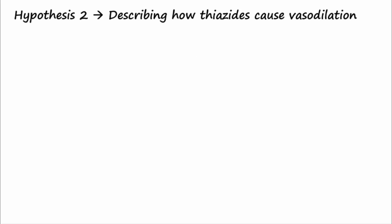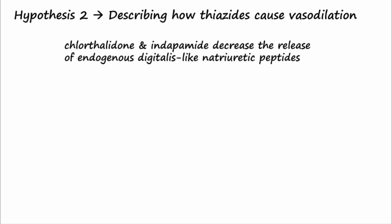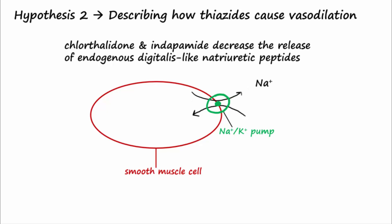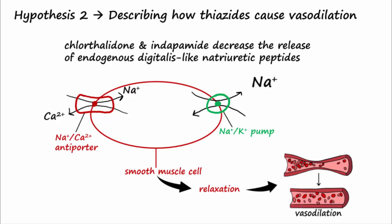Another proposed mechanism of action includes the hypothesis that chlorthalidone and indapamide decrease the release of endogenous digitalis-like natriuretic peptides. This increases the activity of the sodium-potassium pumps in smooth muscle cells, increasing the sodium concentration outside of the cell, which increases the driving force for sodium to enter the cell via sodium-calcium antiporters, driving more calcium out of the cell to cause smooth muscle relaxation and vasodilation.